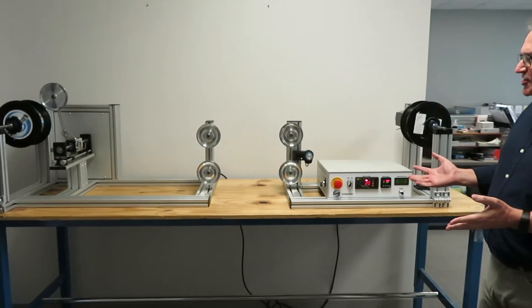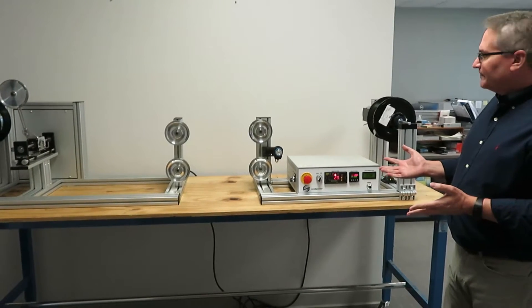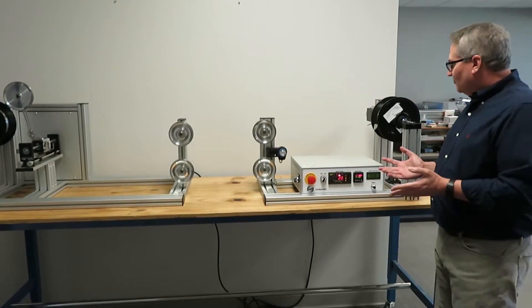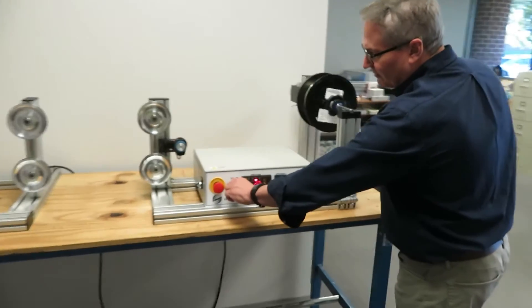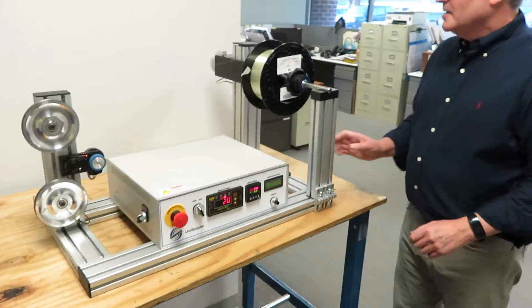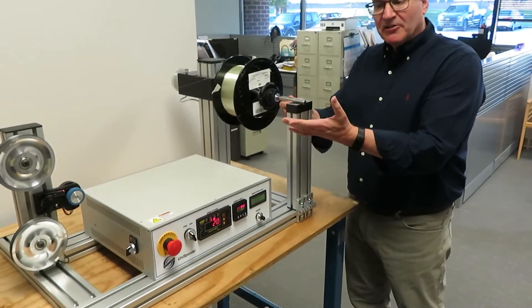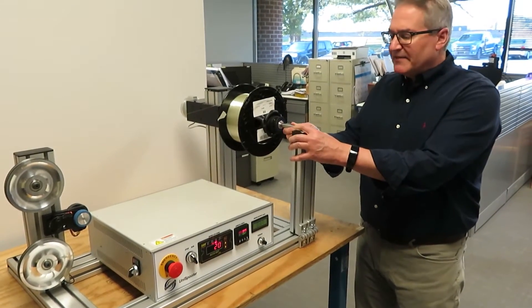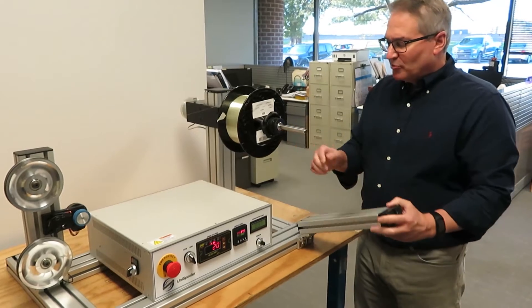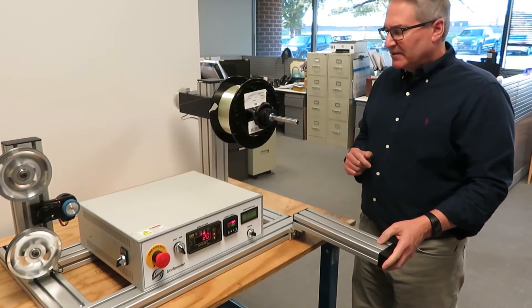This particular machine has a few interesting features on it. One of them is our tailstocks, which here I'll stop it momentarily. The tailstocks are used whenever you have a spool that might be heavier than what can be supported by just a plain cantilevered shaft.